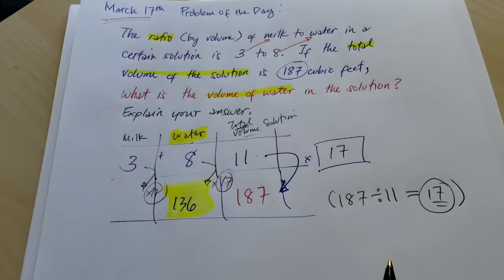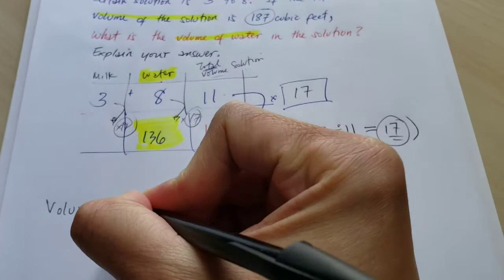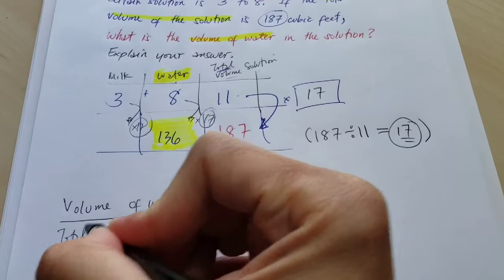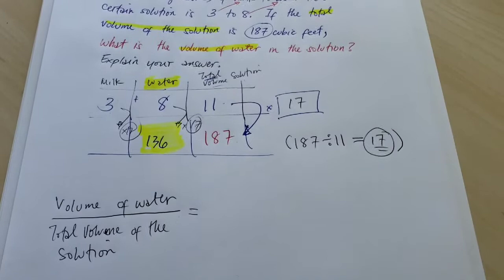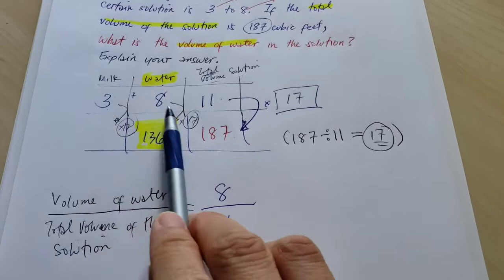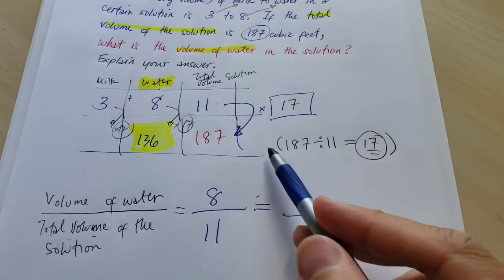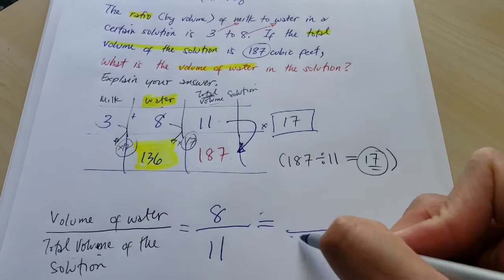Now, the other way of solving it is to use fraction. So again, make sure you label your fraction. So we're comparing two things. We're comparing the volume of water to the total volume of the solution. So we know that the volume of water is 8 cubic feet. And we know that the total volume of the solution is 11. I got 11 by adding 3 and 8. Now, let's create the equivalent ratios. So it says what is the volume of the water in the solution if the volume of the solution is 187. So this would be 187 cubic feet.